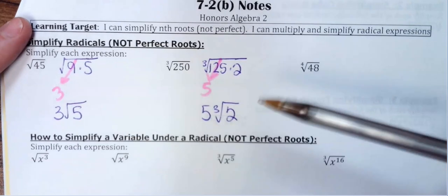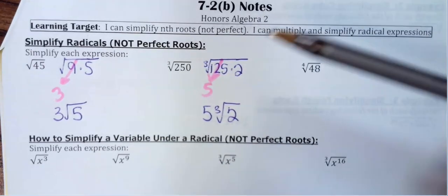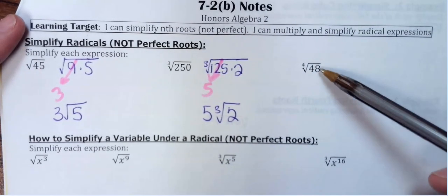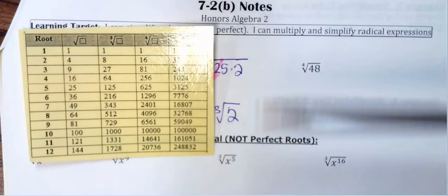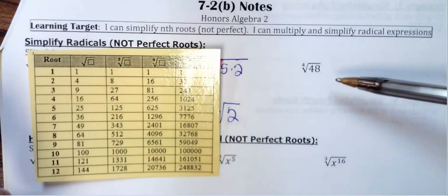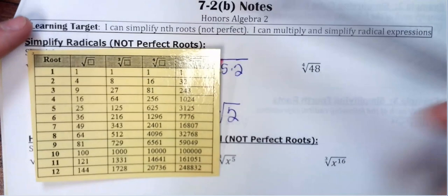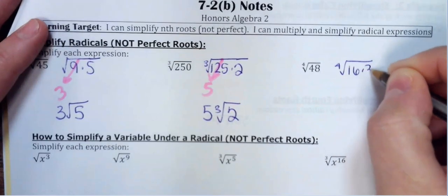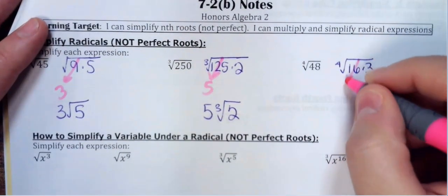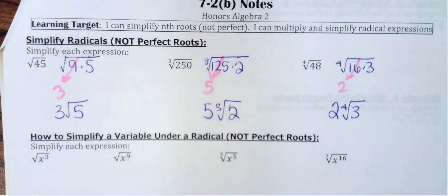If you do a factor tree you need three numbers that are the same to pull it out for a cube root, and four numbers the same for a fourth root. I think it's a little bit faster to find the biggest number on your list of perfect roots. For the fourth root of 48: 48 is divisible by 16 on this list, so I rewrite that as 16 times 3. The fourth root of 16 comes out as 2, simplifying to 2·∜3.